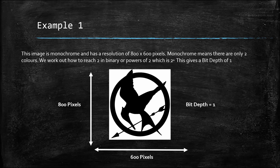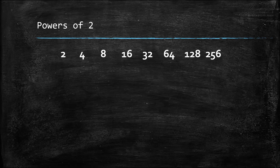In our first example, the image is monochrome and has a resolution of 800 by 600 pixels. Monochrome means there are only two colors in the image. We can work out the bit depth by looking at our powers of two — we work out how to reach two in binary, which is two to the one, giving a bit depth of one. We want to know how to make two from powers of two, because two is the number of colors in our image.